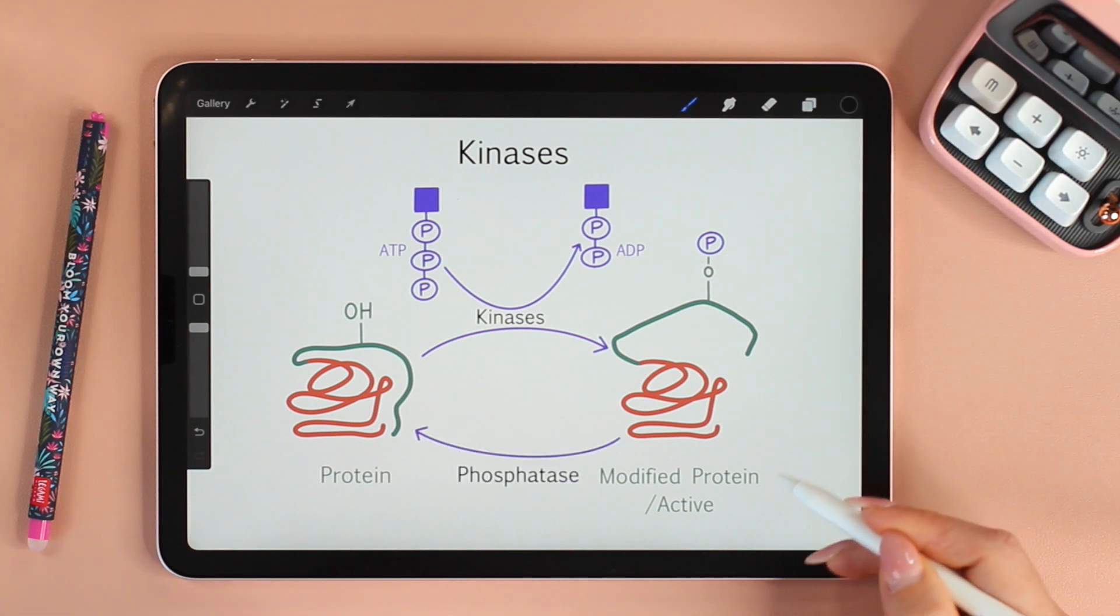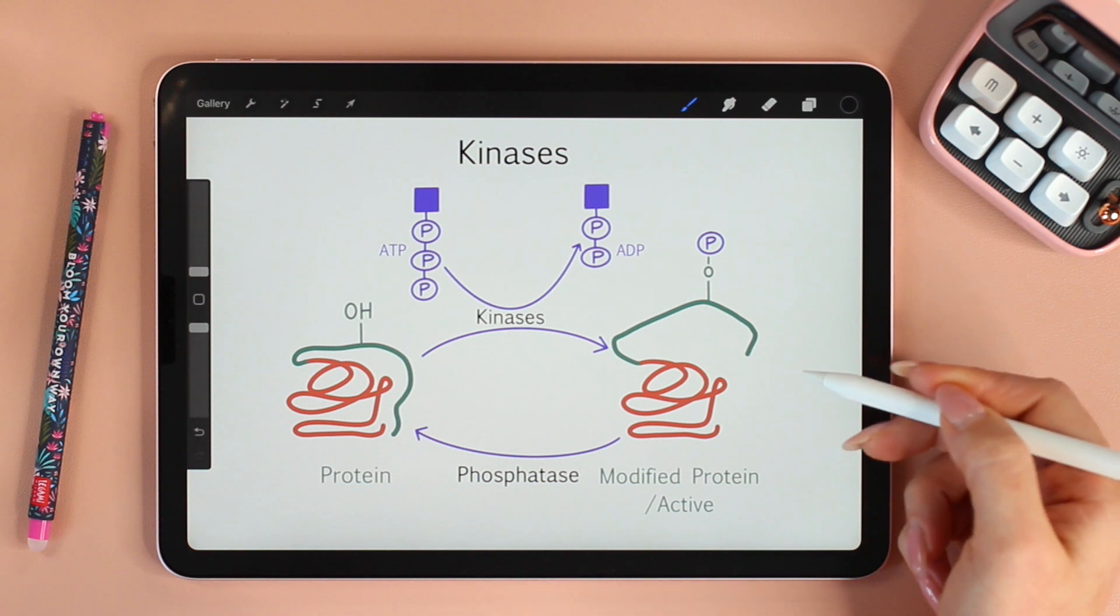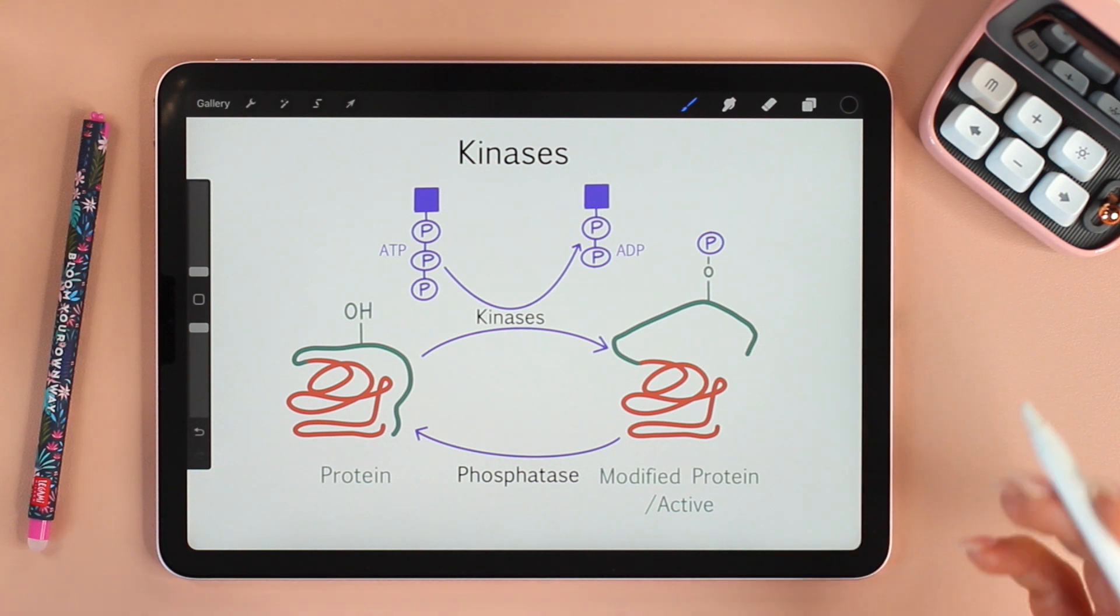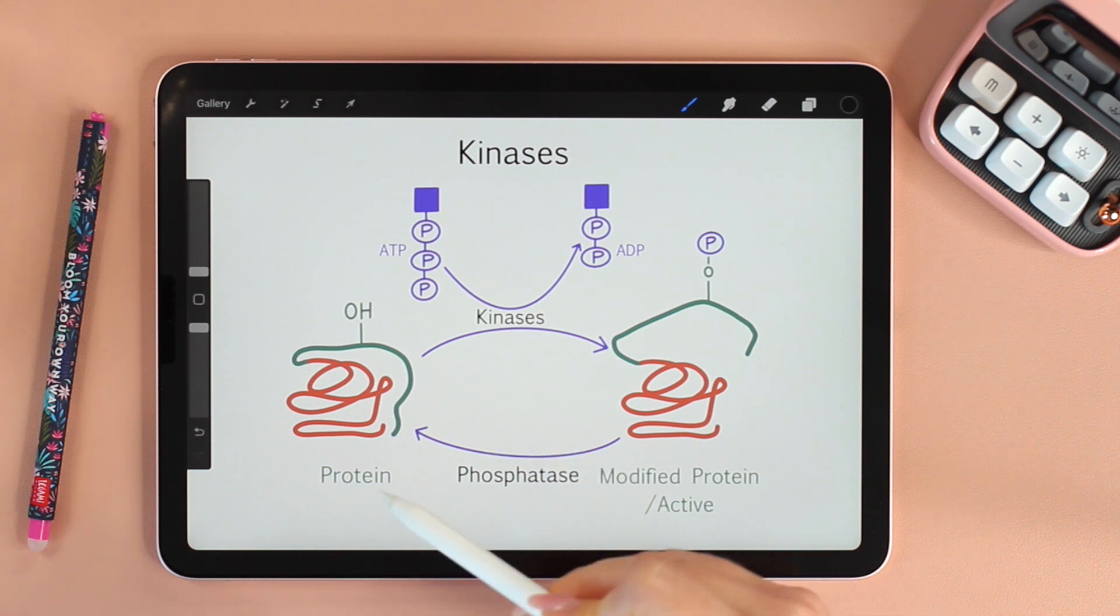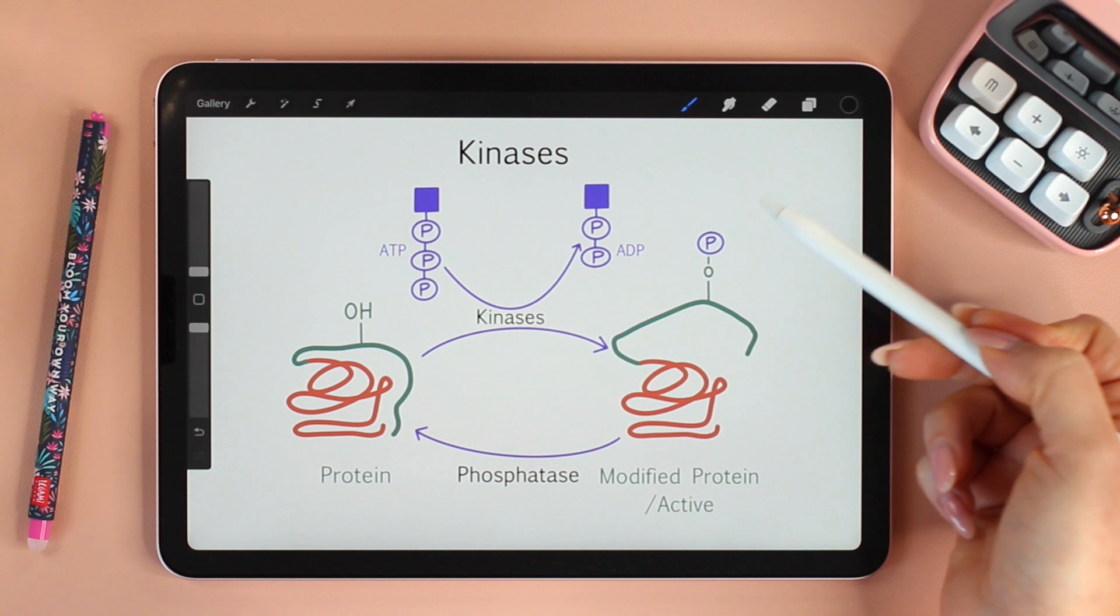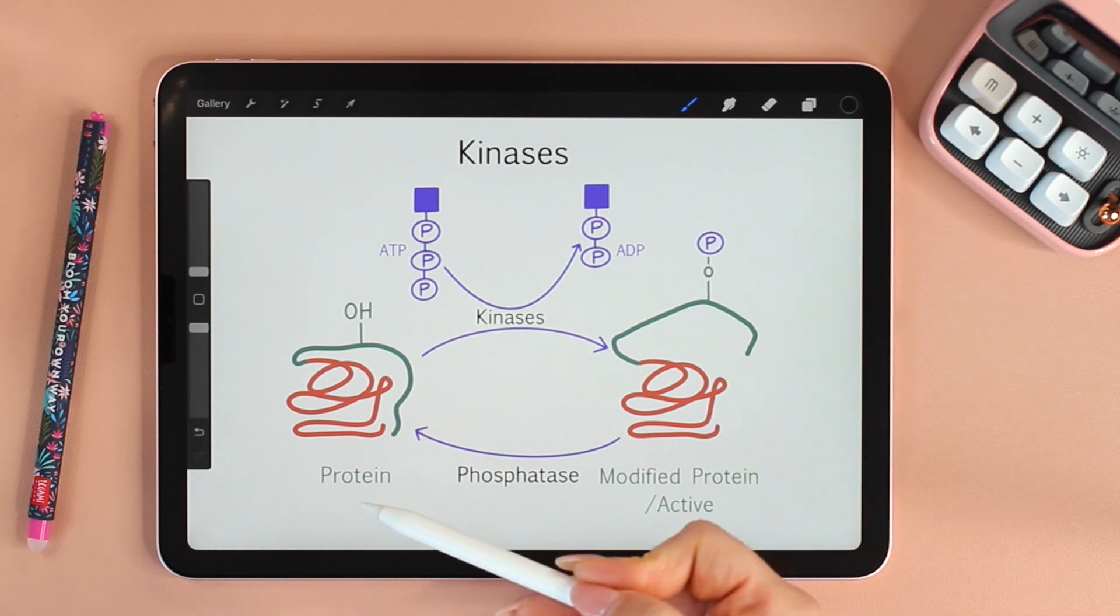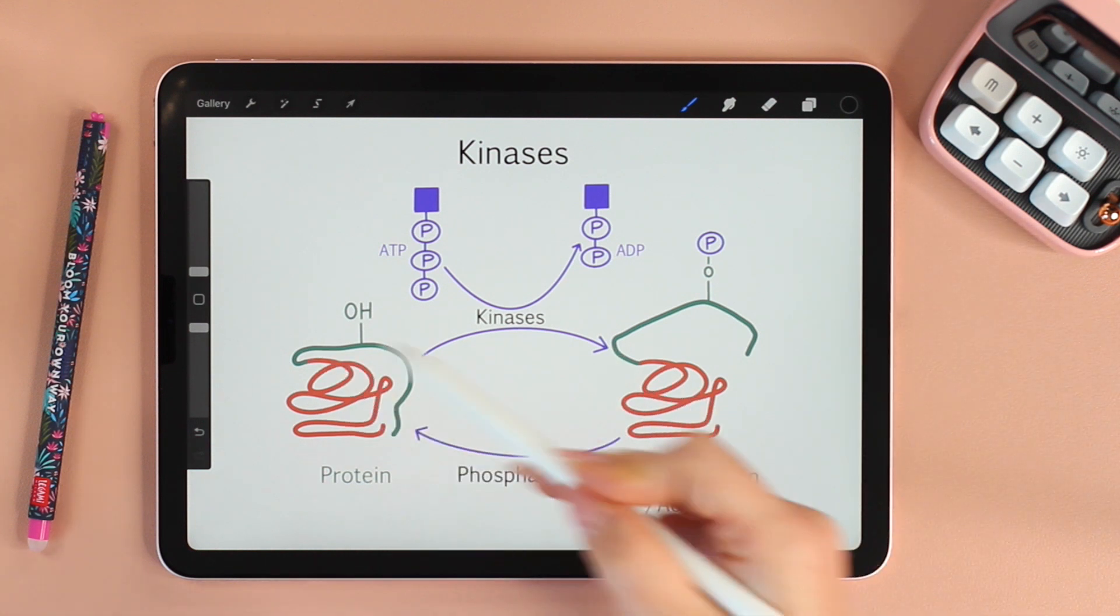And of course, the protein is not going to stay phosphorylated forever. It's not going to stay active. And that's why other enzymes called phosphatases dephosphorylate. They remove the phosphate group from the protein to change it back to its original shape.